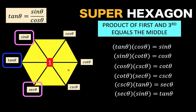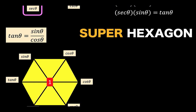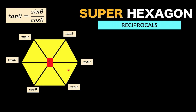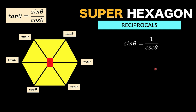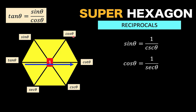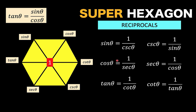Except, of course, for constructing this super hexagon. Next, let's look at the reciprocal identities. Drawing a line across the hexagon, we read sine theta equals 1 over cosecant theta. With the next line, cosine theta equals 1 over secant theta. We can generate all six reciprocal identities using these line arrows, adding another six identities to our previous 18.